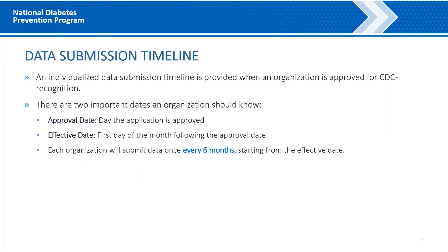Data Submission Timeline. Once your organization has been fully approved, CDC will send you a data submission timeline specific to your organization. There are two dates that are important to your organization. The first is your approval date — the date that your application was approved and the date that you can start holding classes. Your effective date is the first day of the month following the approval date. The month of your effective date will set your data submission timeline. Each organization will submit data every six months starting from the effective date.